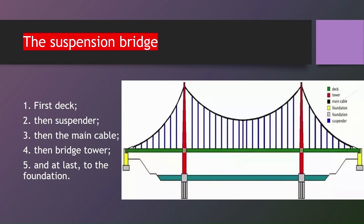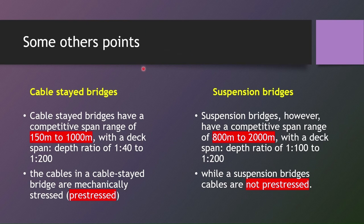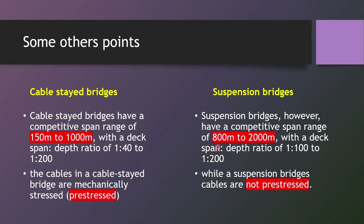Some other points to be mentioned: cable-stayed bridges can be made for shorter spans, typically between 150 to 1000 meters. But where we need more span, like to cover a big river, we opt for suspension bridges, as they have a span range between 800 meters to 2000 meters, which is very large — like the Vidyasagar Setu in Kolkata.